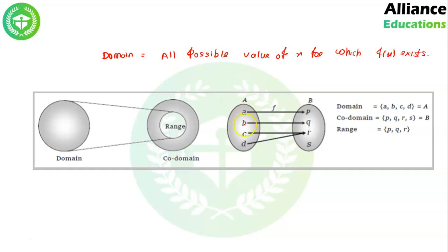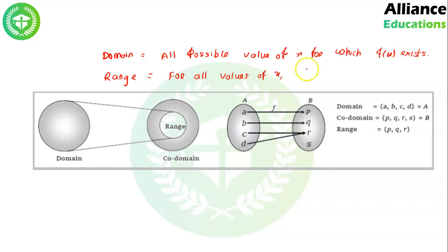When we substitute values of x into the function, the value we get is f(x), and that is called the range. Range is all possible values of f(x) for all values of x. So the values we get as output after inputting domain values are called the range.